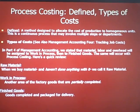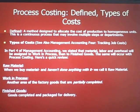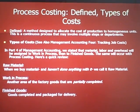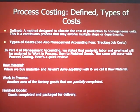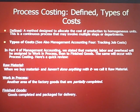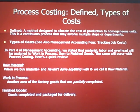Let's define it. Process costing is a method designed to allocate the cost of production to homogeneous units. This is a continuous process that may involve multiple steps or departments. As for types of costs — if you saw our Management Accounting 4 class, you saw these costs before. In that course, we stated that material, labor, and overhead would be assigned to work in process, then to finished goods. The same will occur in process costing.